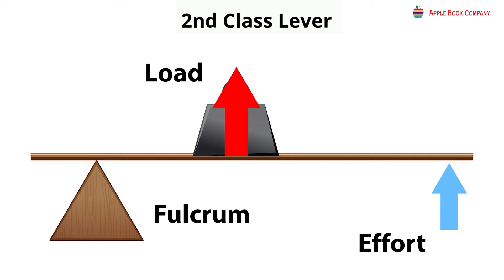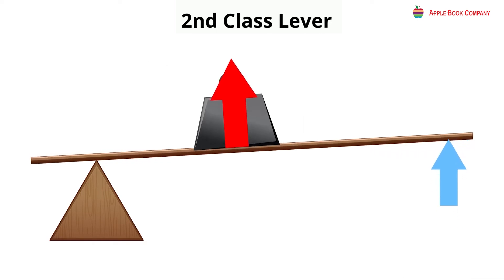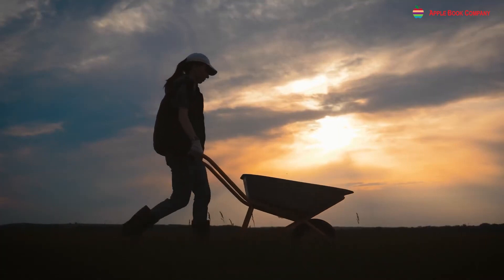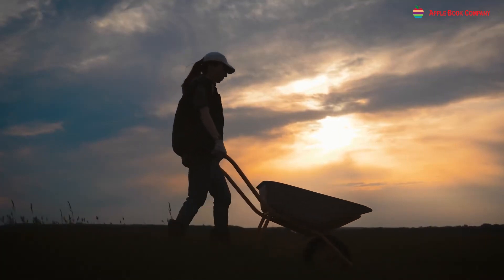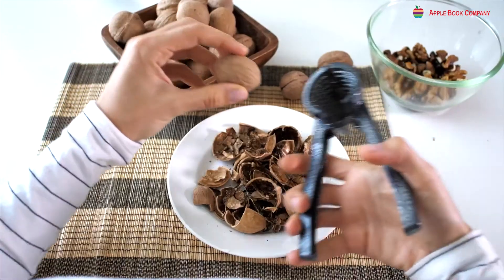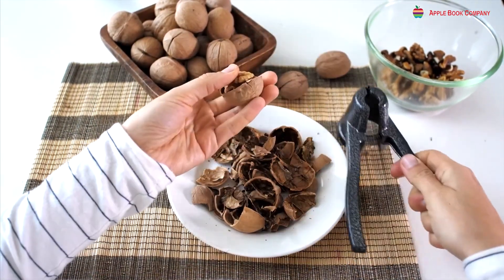Second class lever: when the load is in the middle, the fulcrum is at one end, and the effort is at the other end, it is called a second class lever. A wheelbarrow is an example — the weight is the load, the axle of the wheel is the fulcrum, and the handles are the effort. A nutcracker is another example of a second class lever.